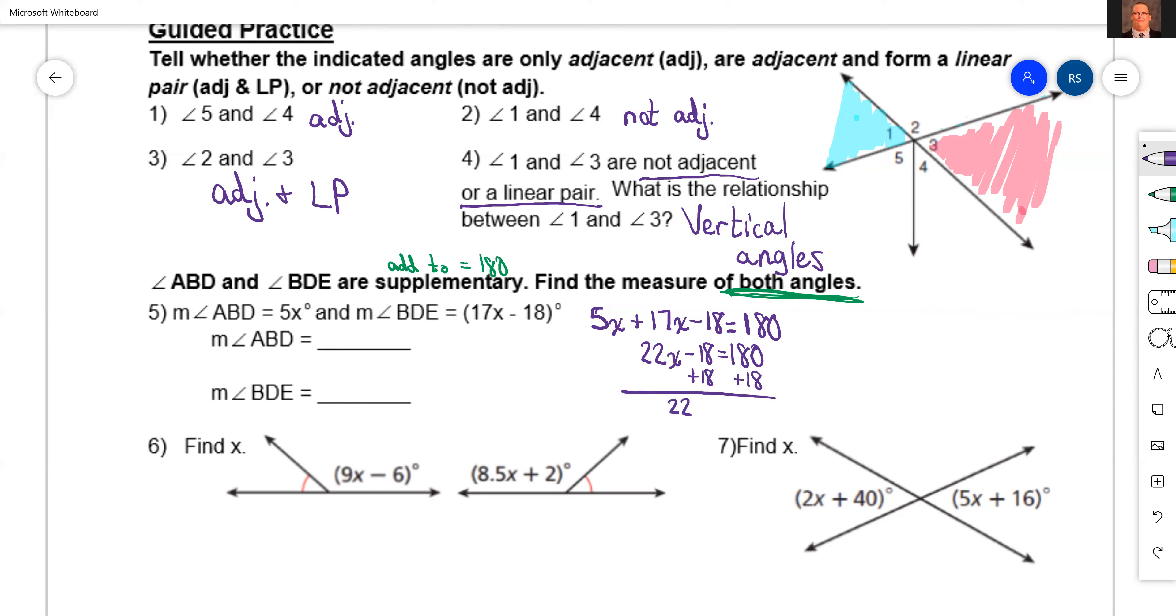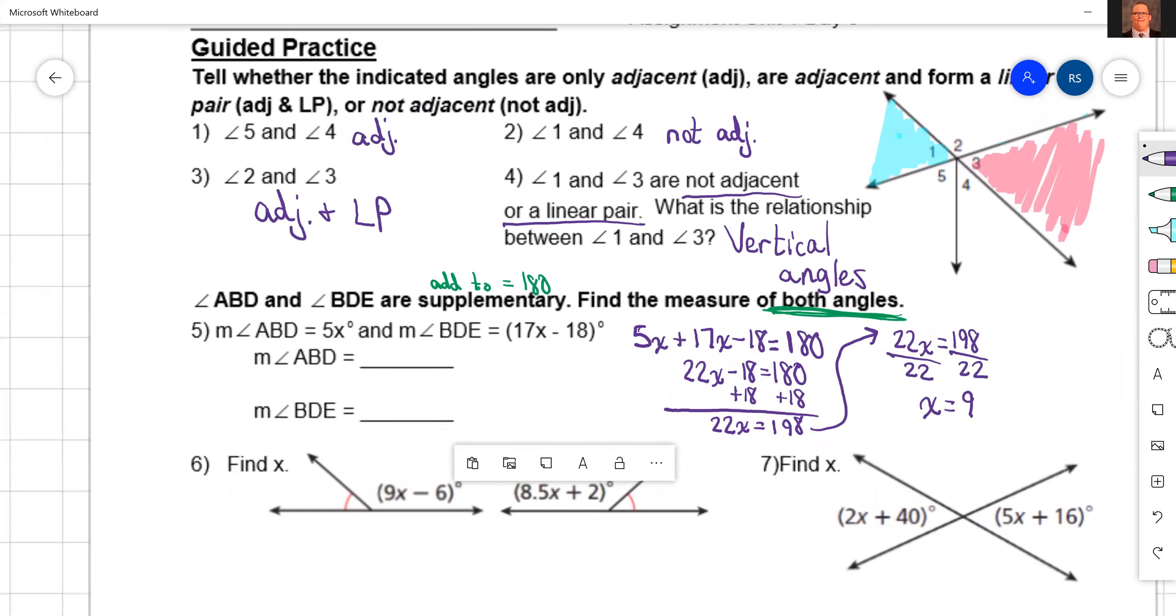Add 18 to both sides, going to give us 22x equals 198. Divide by 22, I'm going to get x equals 9.